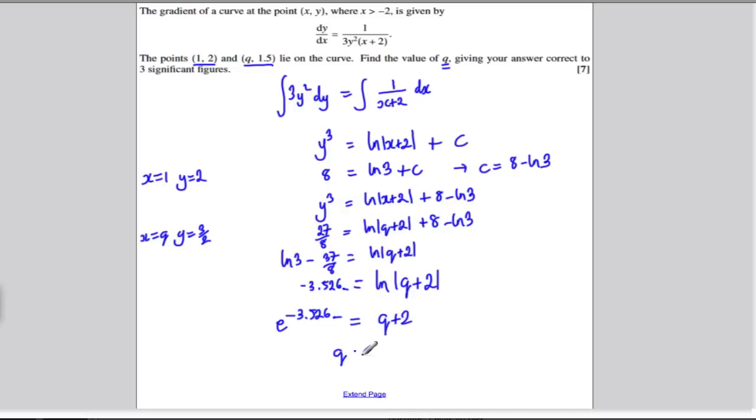So, rearranging q is this number, subtract 2. So, e to the minus 3.526, subtract 2. And you get that q is minus 1.97, correct to 3 significant figures. So, q is equal to negative 1.97 to 3 significant figures.